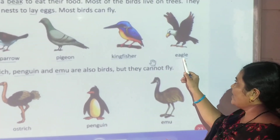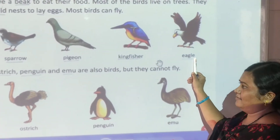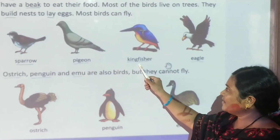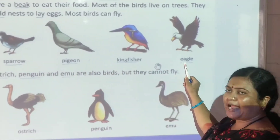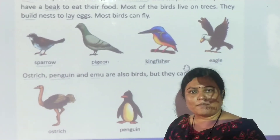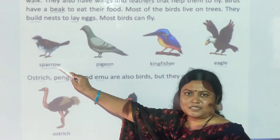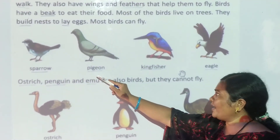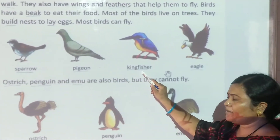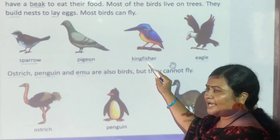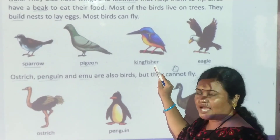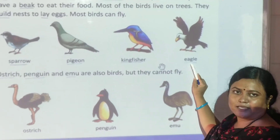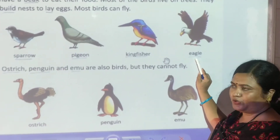Eagle. E-A-G-L-E, eagle. Sparrow means chimney. Pigeon means kabutar. Kingfisher is a bird. Eagle means guru.